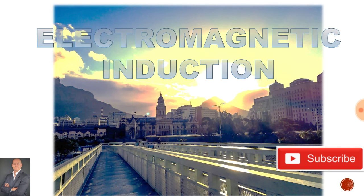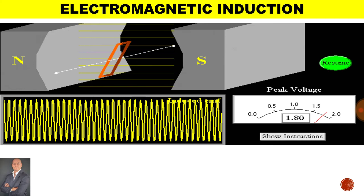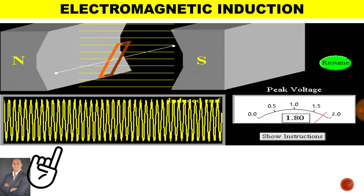Welcome to N4 Electro-Techniques. In this lesson we will be taking a look at Electromagnetic Induction. To induce an EMF we need a permanent north pole magnet and a permanent south pole magnet. When a coil rotates through the lines of flux, we are able to generate an EMF.